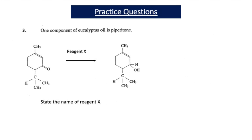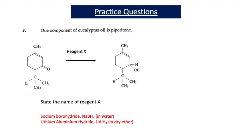Question 3 presents a component of eucalyptus oil, which is a ketone. When it reacts with reagent X, the C double bond O in this ketone is removed and an alcohol is produced. Since a ketone is changing to an alcohol, reduction must have taken place, and therefore reagent X is a reducing agent. They will accept either sodium borohydride, NaBH4, carried out in water, or lithium aluminium hydride, LiAlH4, the more powerful reducing agent, which is carried out in dry ether.